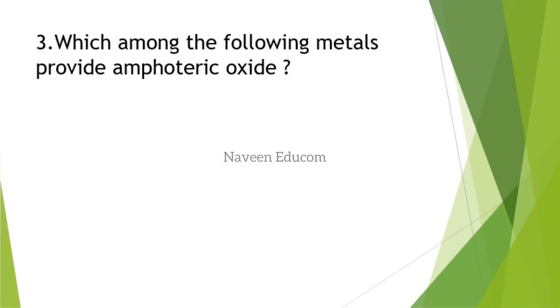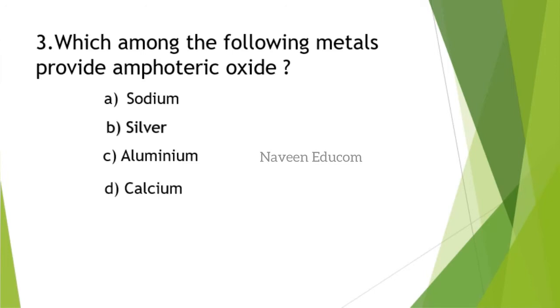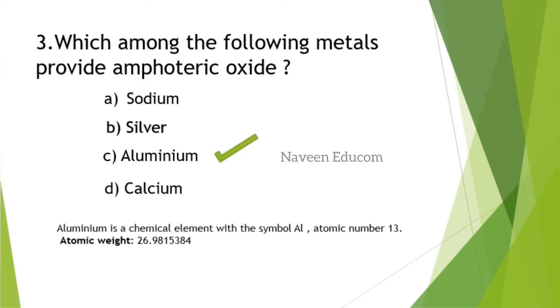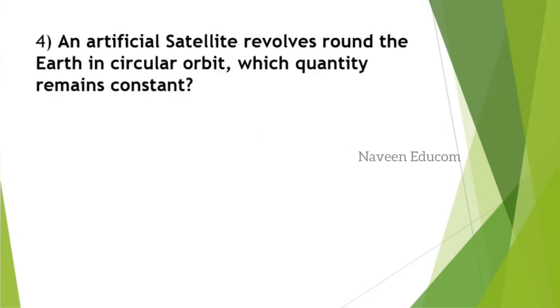Which among the following metals provide amphoteric oxide? These are repeated questions in several competitive examinations in the static GK portion. Kindly note down all the important points and study these questions. The answer is aluminum. Students, it's always better to either scribble it on a notebook or take a screenshot of this slide.